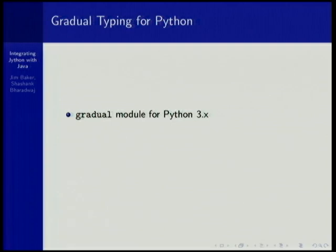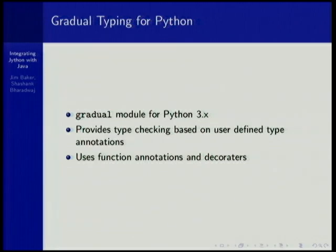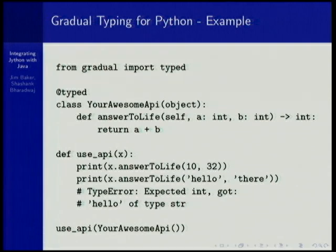We thought we could use this nice property of gradual typing and get it into Python. We wrote a small Python module for Python 3x, which makes use of the different type annotations introduced in 3x — function annotations, class decorators, and function decorators. What it basically provides is sort of type checking. This is just vanilla Python 3x — no modification to the underlying runtime at all.